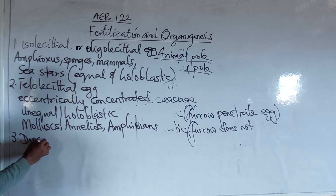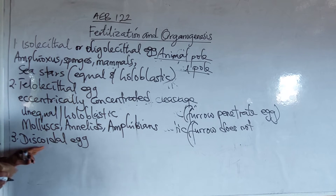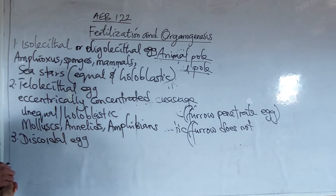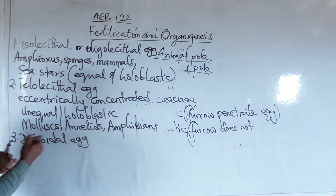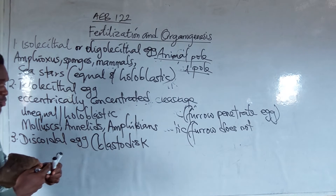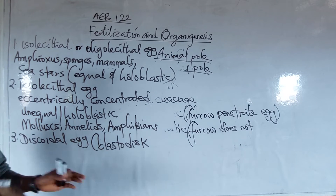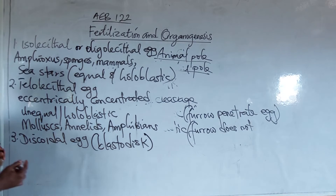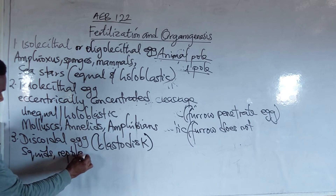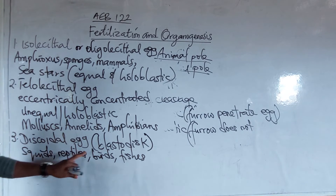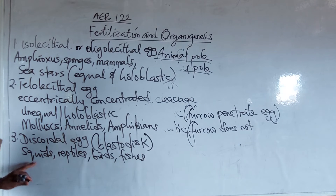Number three, we have the discoidal egg. The discoidal egg has enormous yolk in it, such that it results in the formation of a microscopic spot called the blastodisc. So the blastodisc is associated with the discoidal egg. Examples of organisms that possess the discoidal egg are squids, reptiles, birds, and fishes.